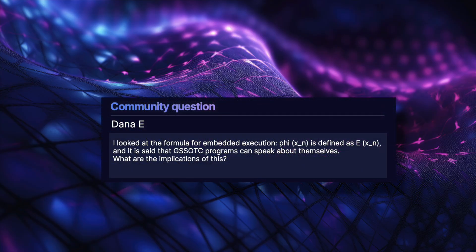The next question from Dana: I looked at the formula for embedded execution — phi of X sub N is defined as E of X sub N — and it is said that GSS OTC programs can speak about themselves. What are the implications of this? This embedded execution is subsumed by the much better point-wise revision. The idea of point-wise revision is a mechanism for software updates. It allows an update without updating everything, without having to specify the whole program from scratch, but only the part that you want to change. This also covers giving commands to a robot or to the system, which is what embedded execution historically intended to do. Now that we have point-wise revision, we have a much better approach.